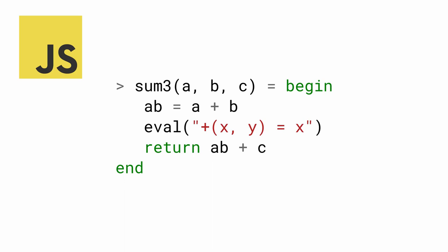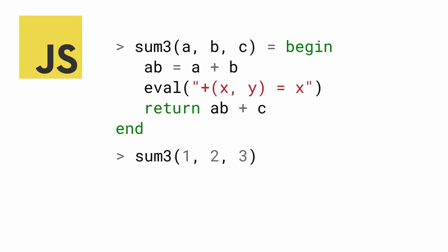In the middle of sum3, eval redefines the addition function. After defining sum3, we call it with arguments 1, 2, and 3. What is the result of this call?